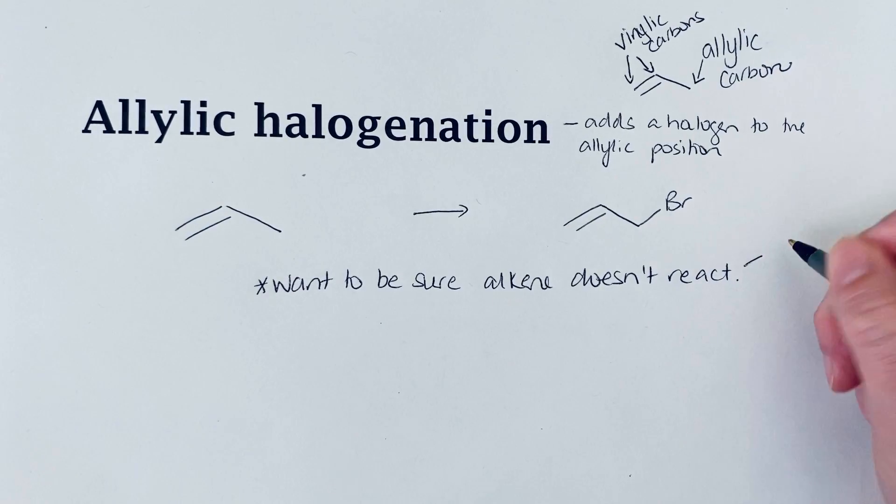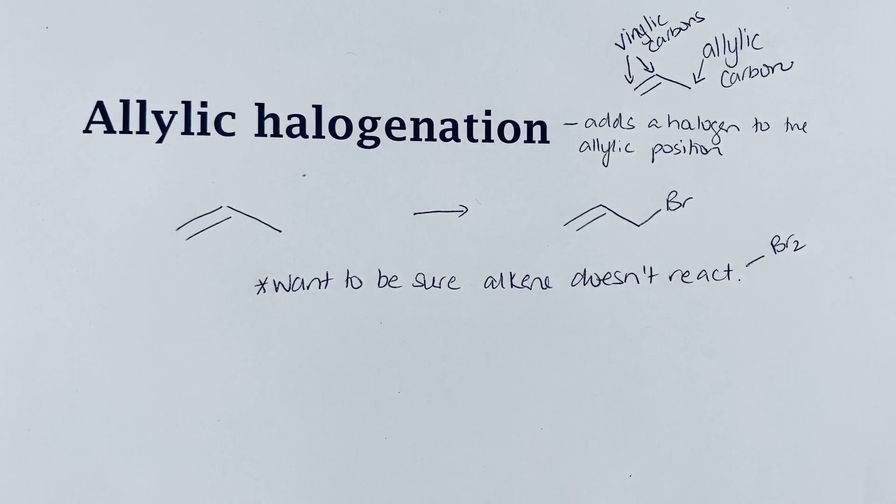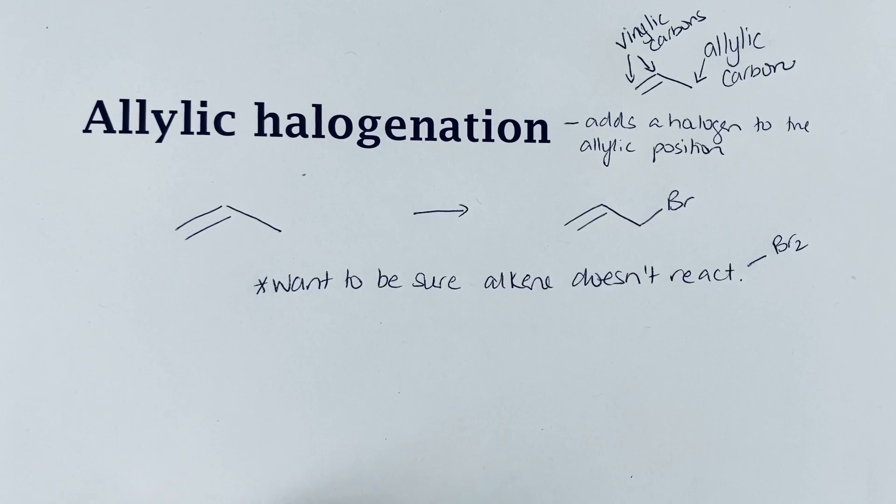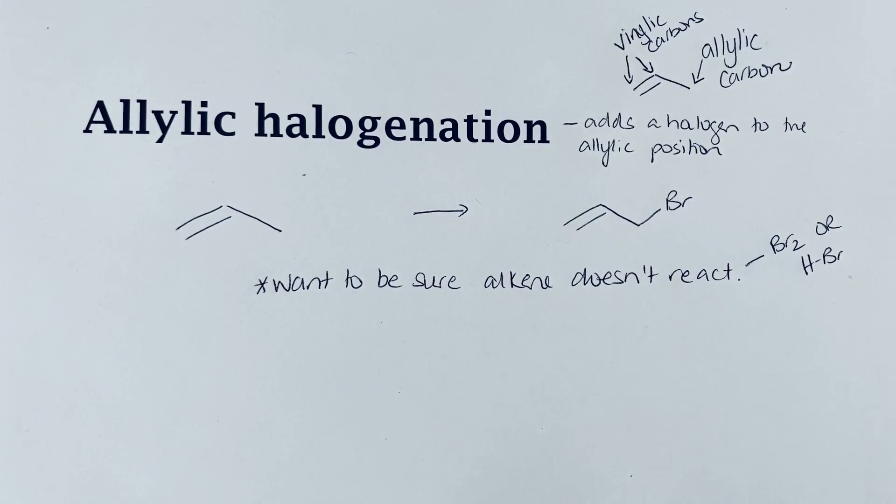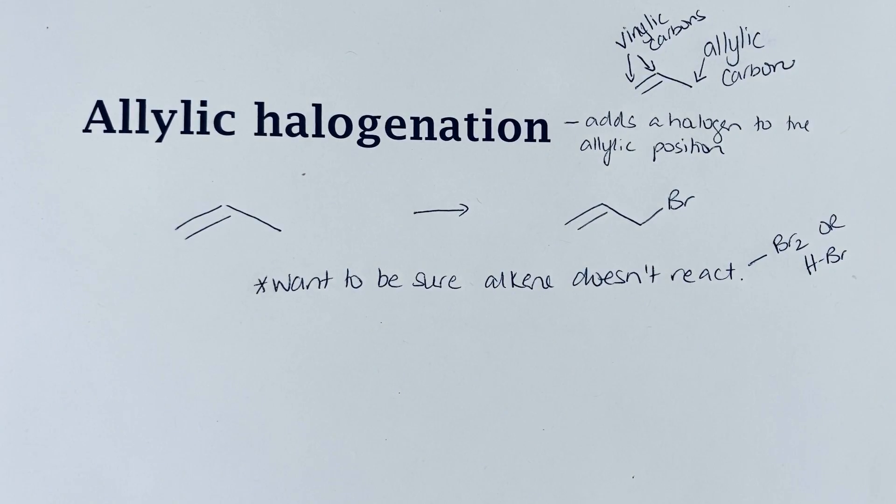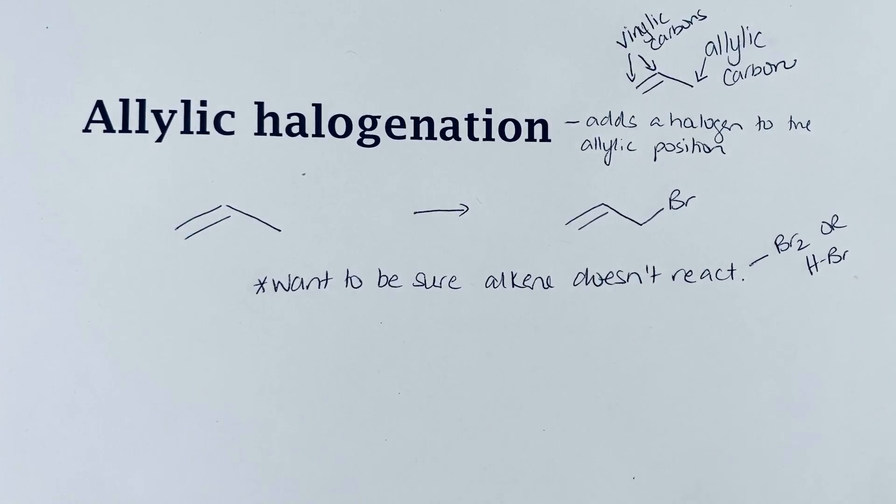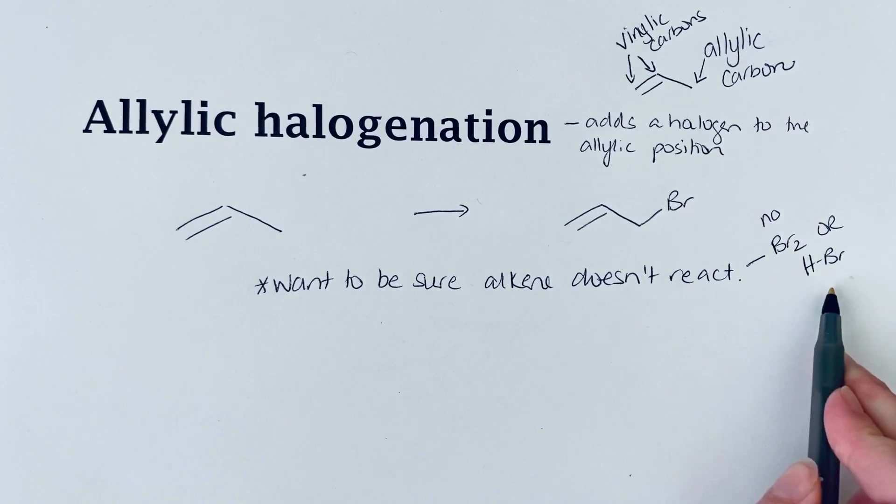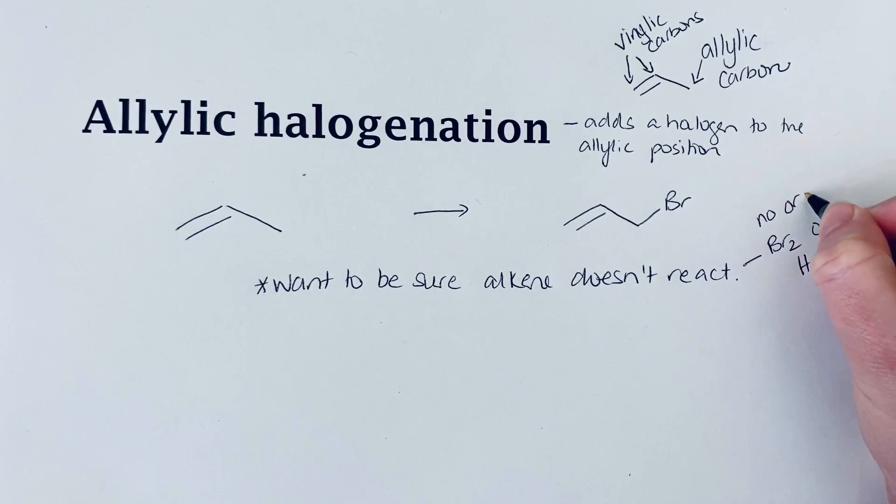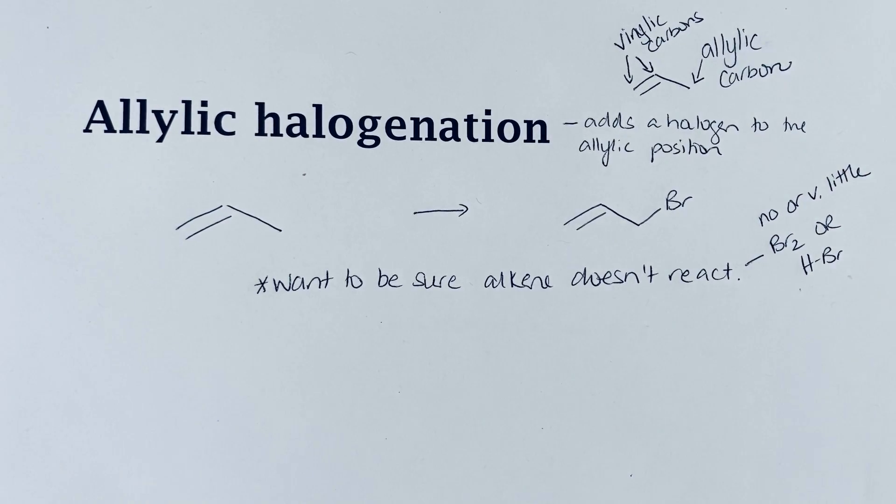We want to make sure that we don't have Br2, which could add to give us the dibromide, or HBr, which could add across that alkene to give us an alkyl halide that does not contain the pi bond. You want to have no or very little of these two reagents.